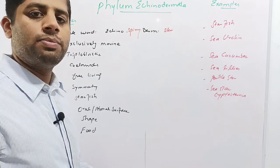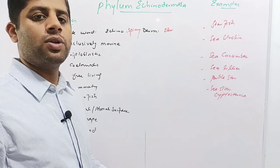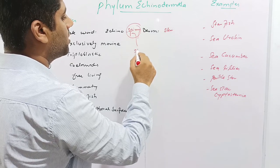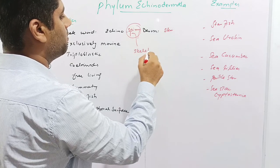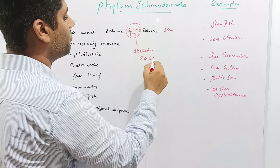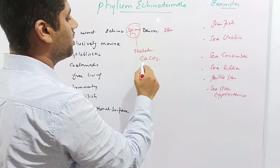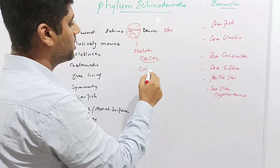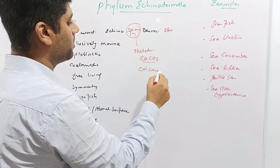Animals or members of the Phylum Echinodermata have spiny skins, and these spines basically form the skeleton of these animals. This skeleton is composed of calcium carbonate and is also called a calcareous skeleton.